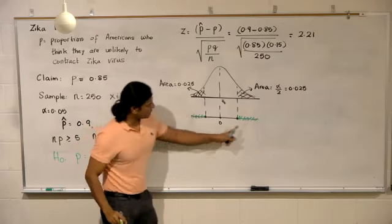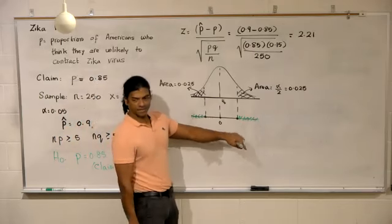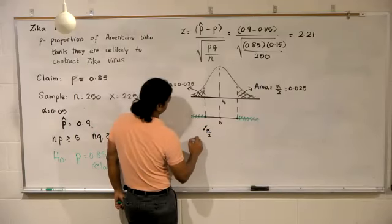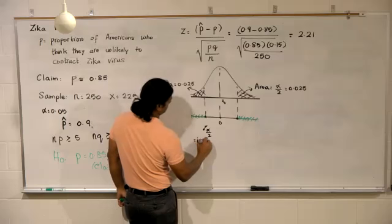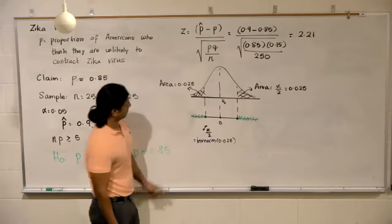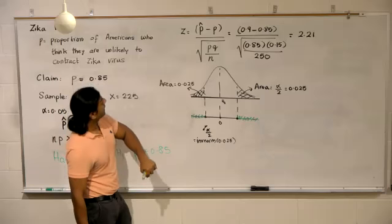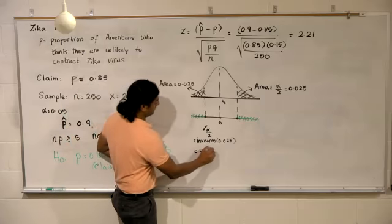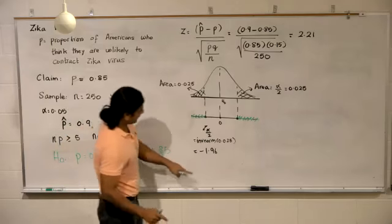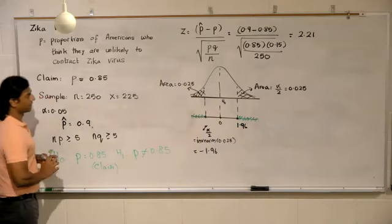Is it necessary to find both critical values? No, you find one, multiply by negative one, you get the other. Inverse norm of the area below, which is 0.025, gives negative 1.96. If this is negative 1.96, that is positive 1.96.